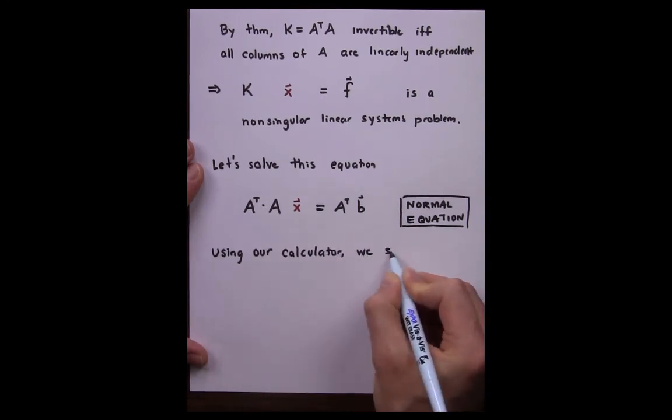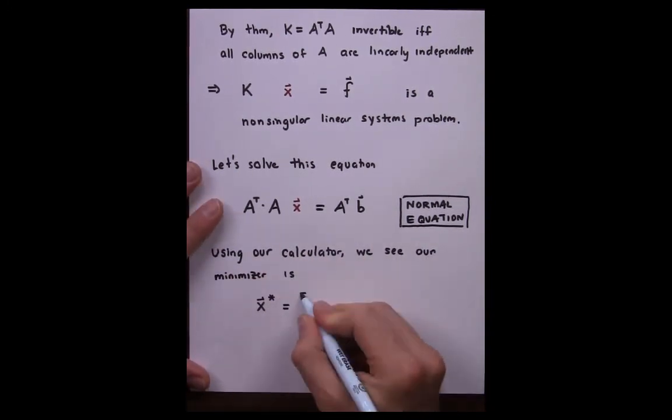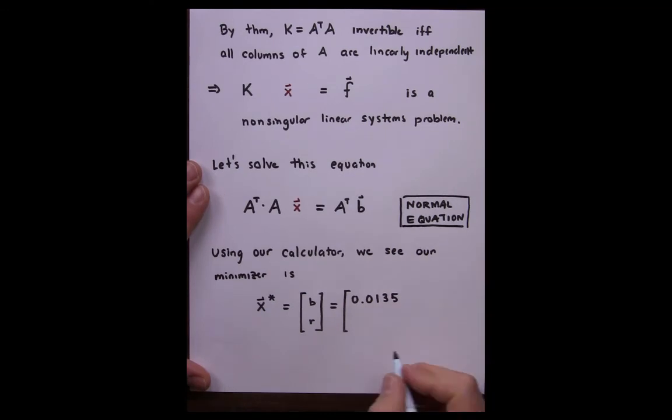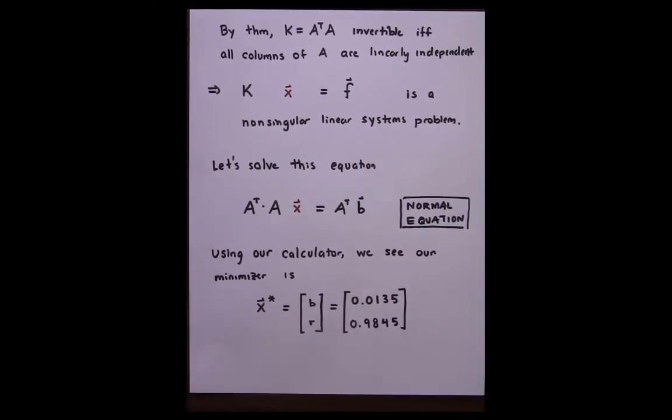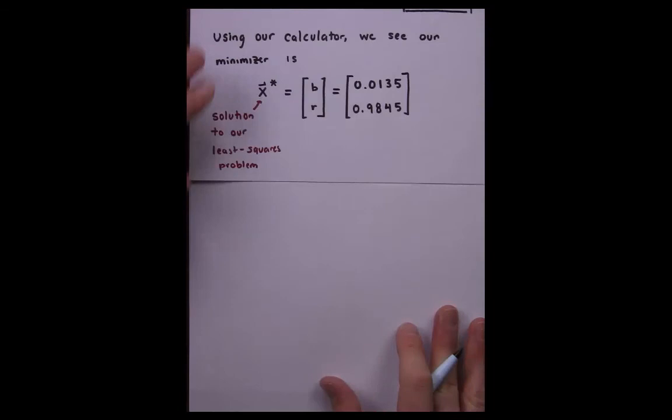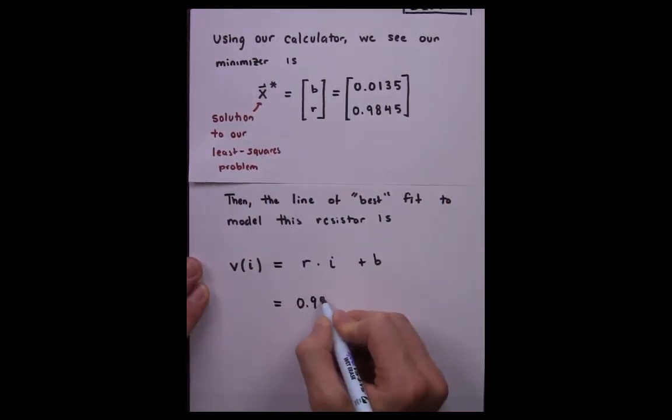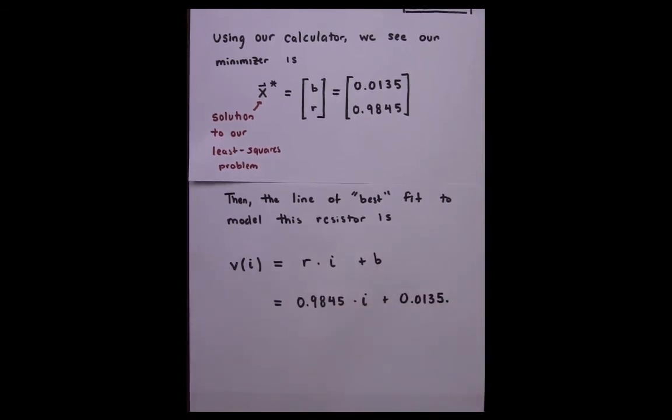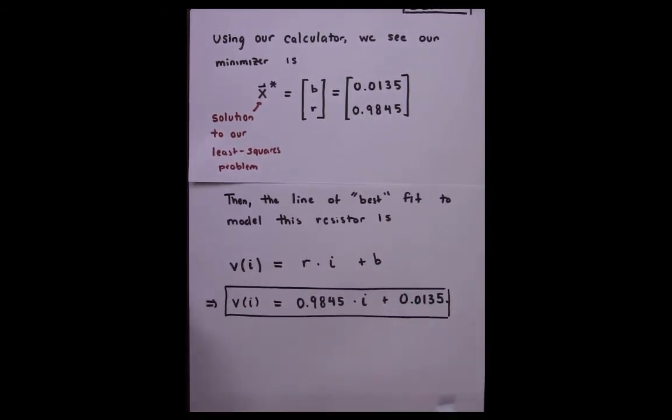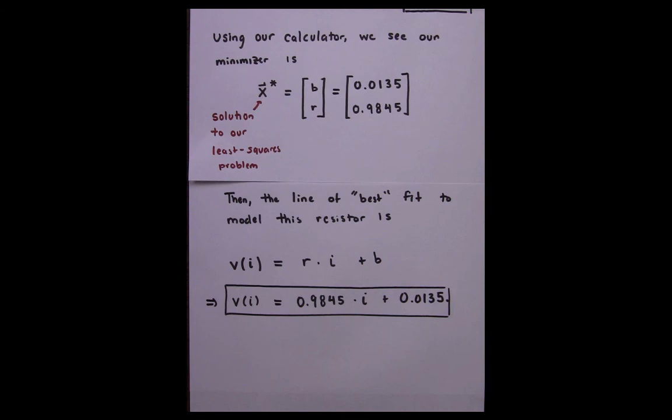We take this solution from our calculator to find parameters B and R from our original linear model for V_I, and we form the line of best fit for this model given by V of I equal to R times I plus B. This is now the least squares solution of the data interpolation problem, which comes from solving the associated linear systems problem known as the normal equations.